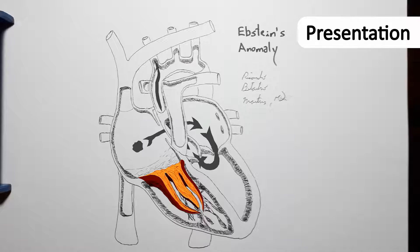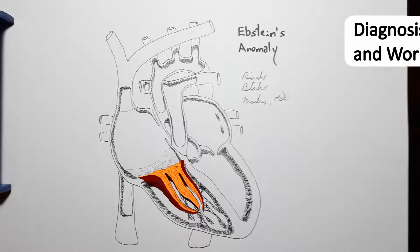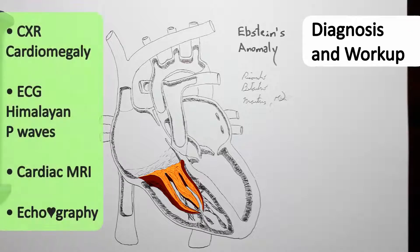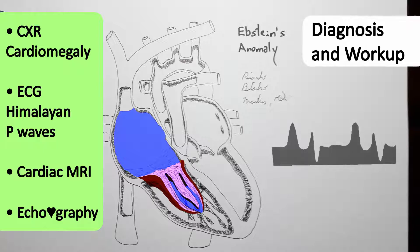And speaking of investigation, chest radiography will show cardiomegaly because of the large right atrium, and electrocardiography will show Himalayan P-waves.